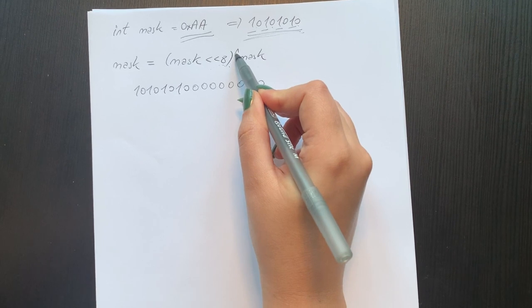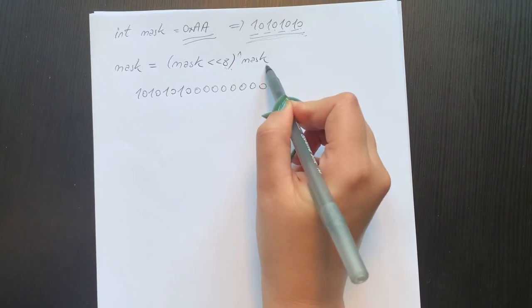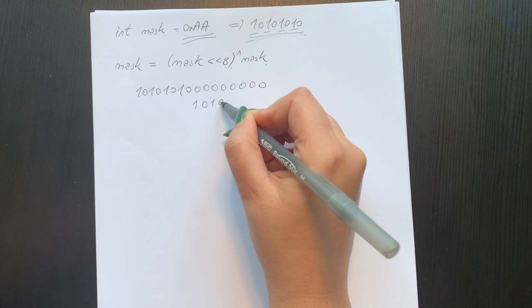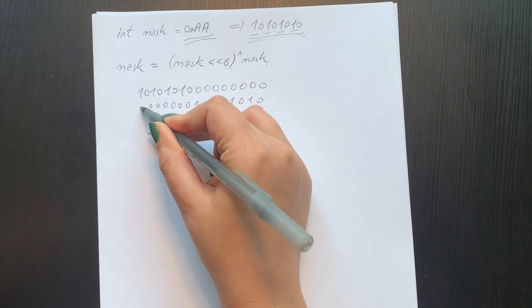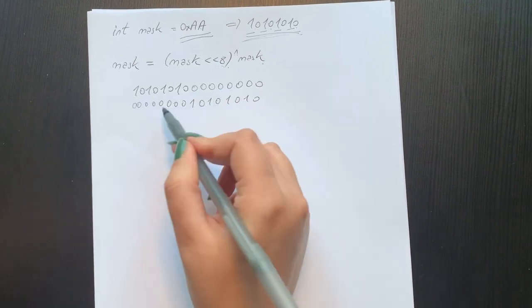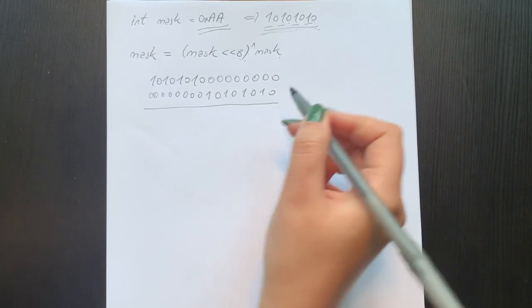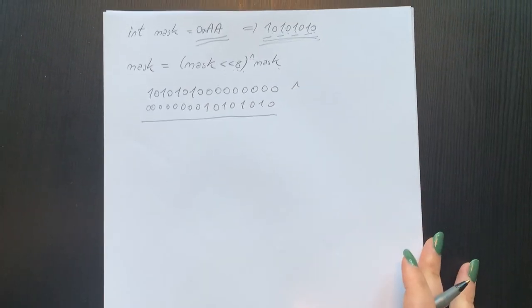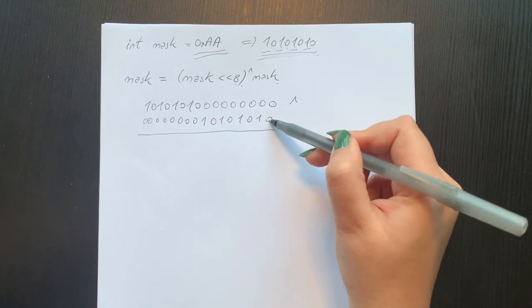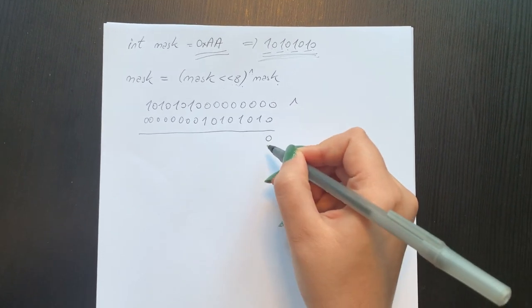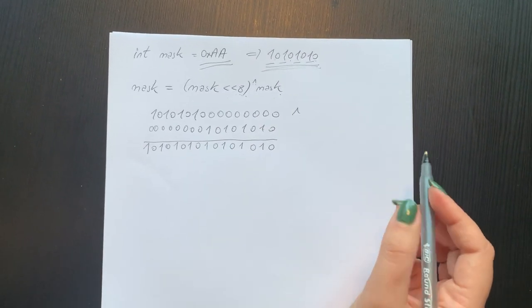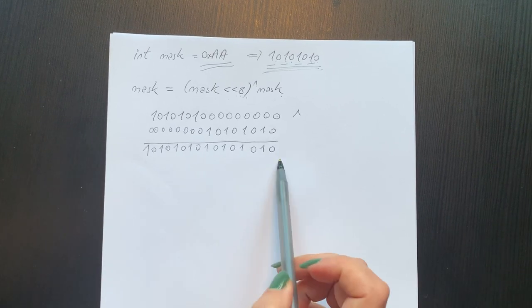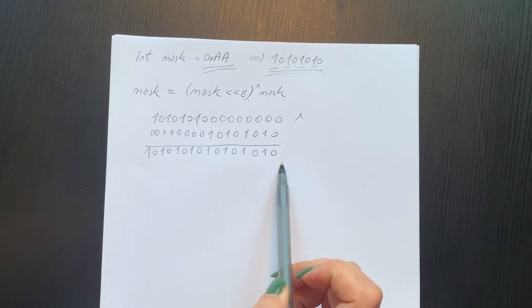And then we have to OR it with the mask. We copy the number, and then we add the zeros here to pad it. Then if we want to do the OR operation, 0 with 0 is 0, 0 with 1 is 1. So this is what we got after the first operation.